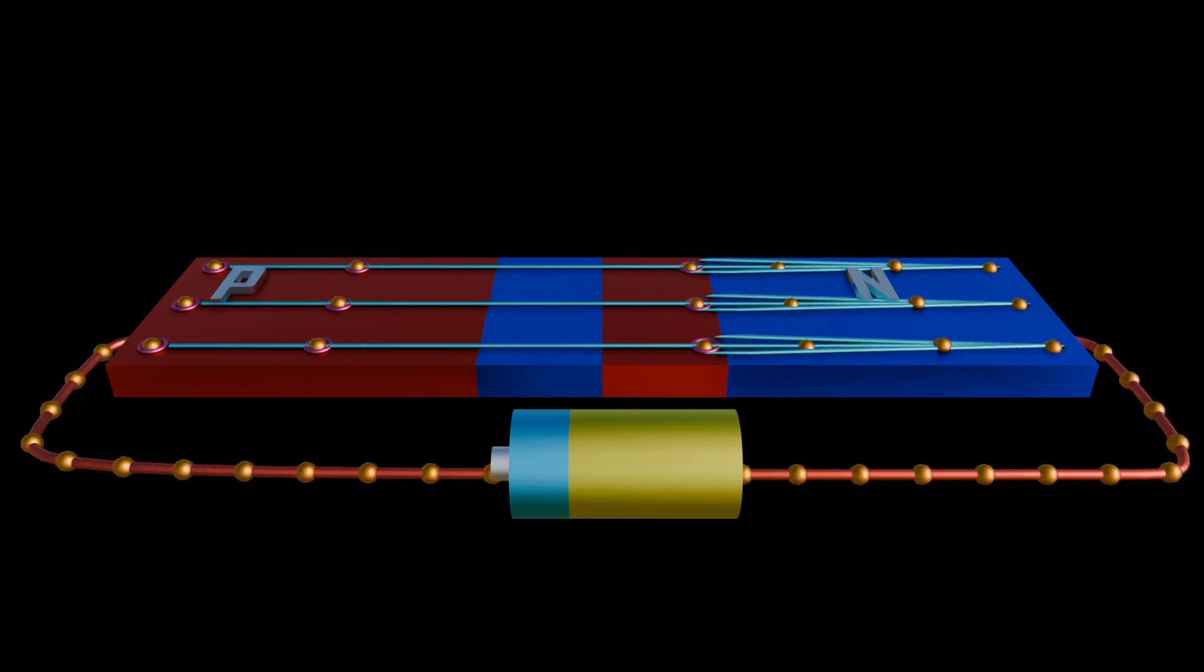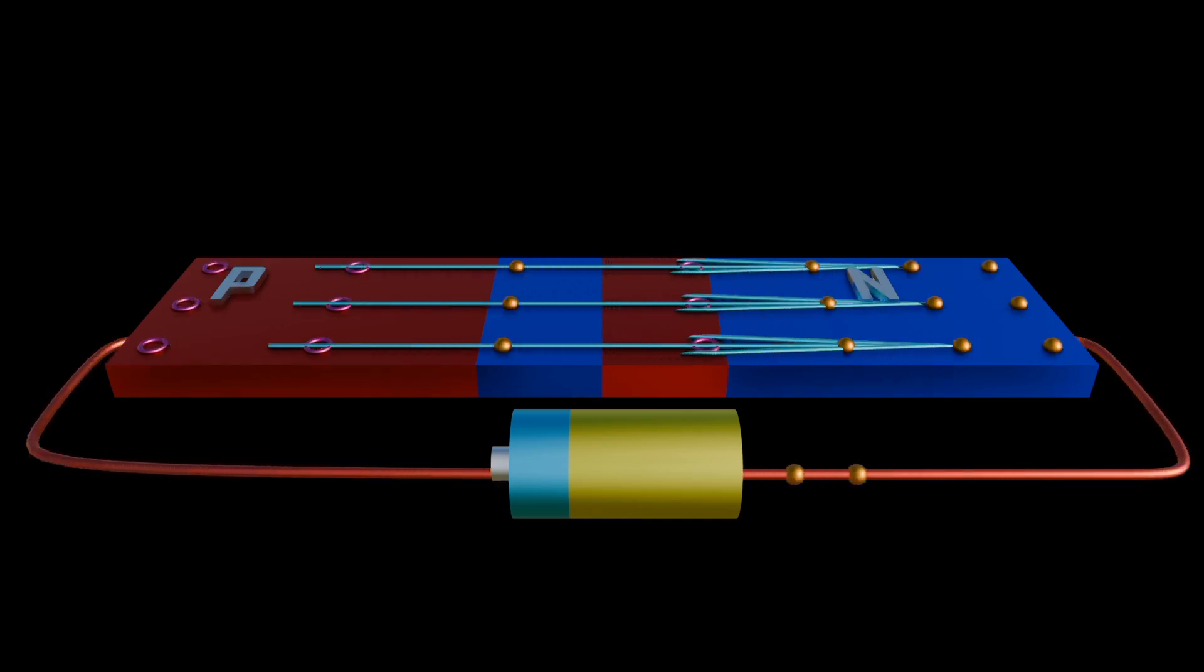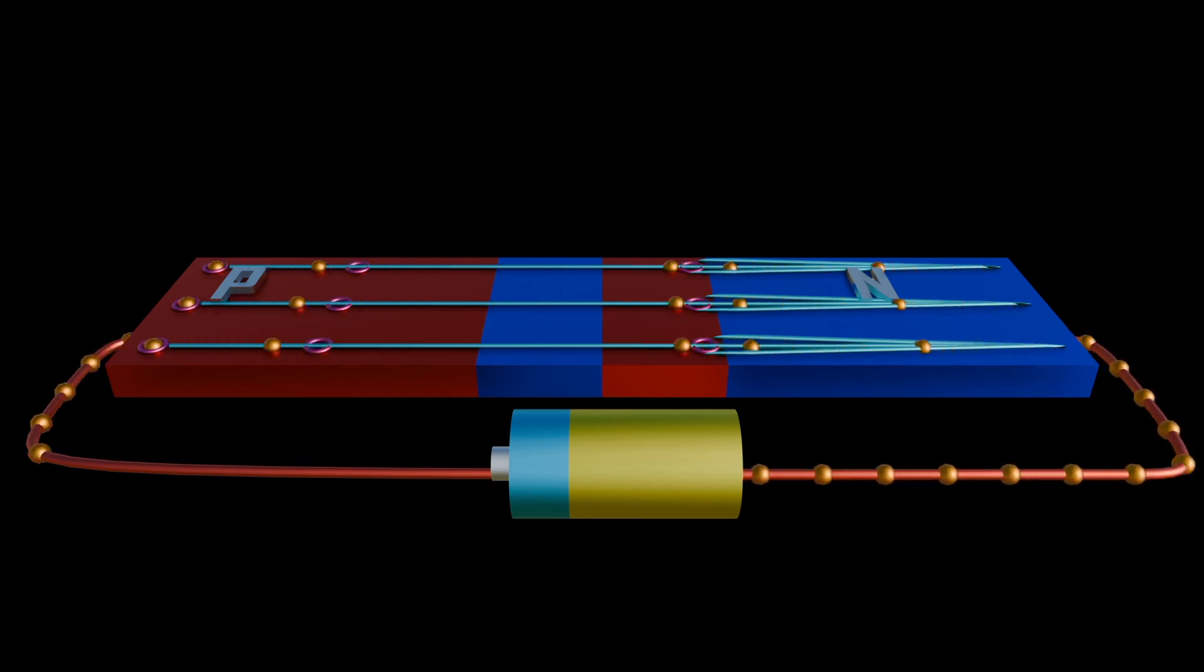When the diode is forward biased, it means the positive terminal of the battery will be connected to the P-type side of the semiconductor, and negative battery side to the N-type side of the diode. Since there is electric field, the electrons easily flow across the junction. The P-N junction will conduct current easily when an average of about 0.3 volts for germanium is met, and 0.7 volts for silicon is met.